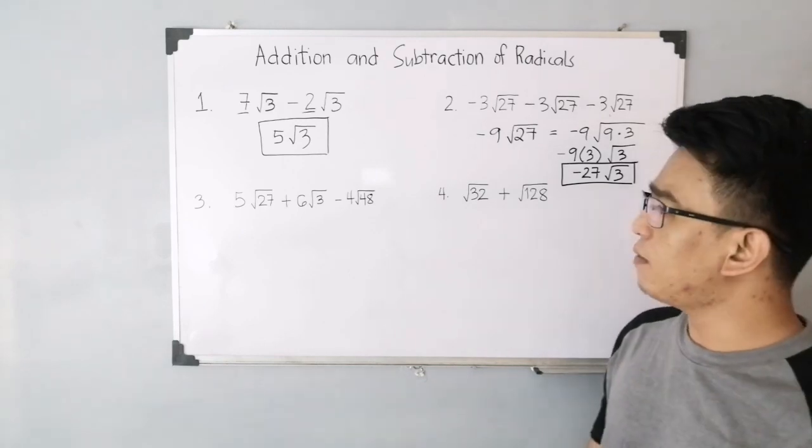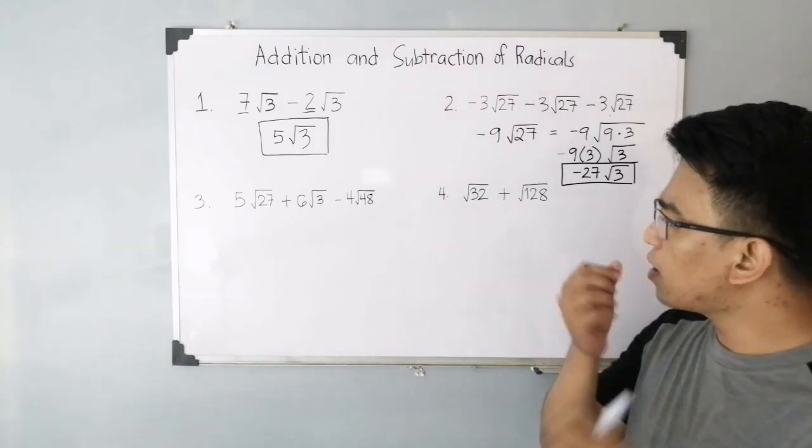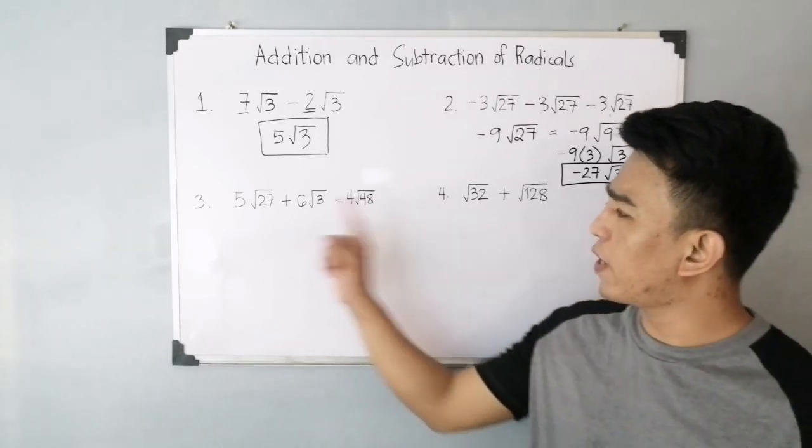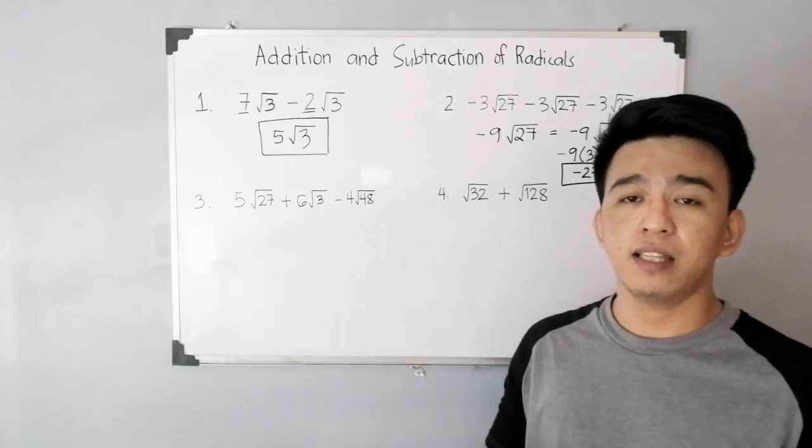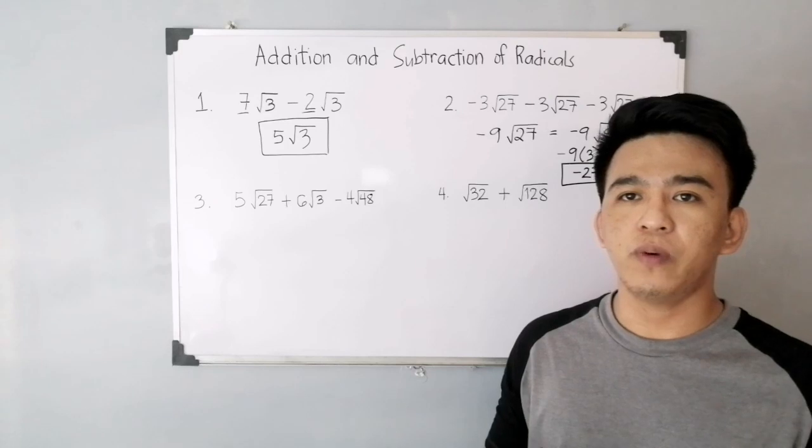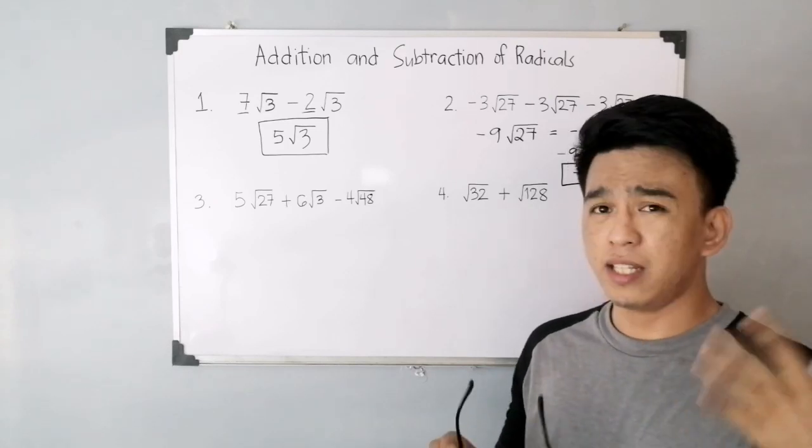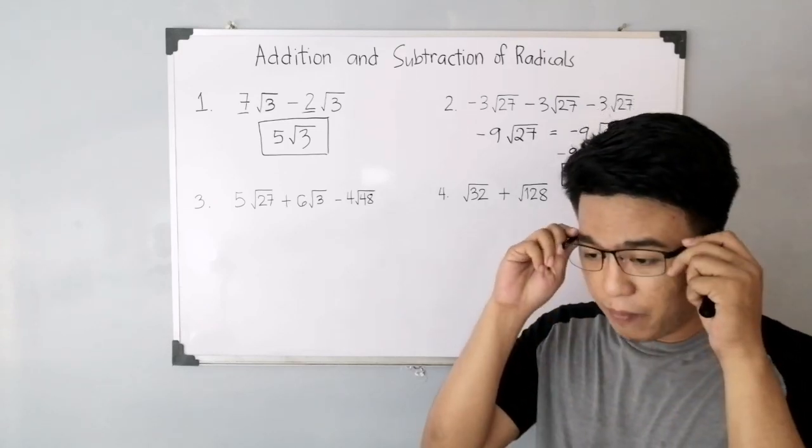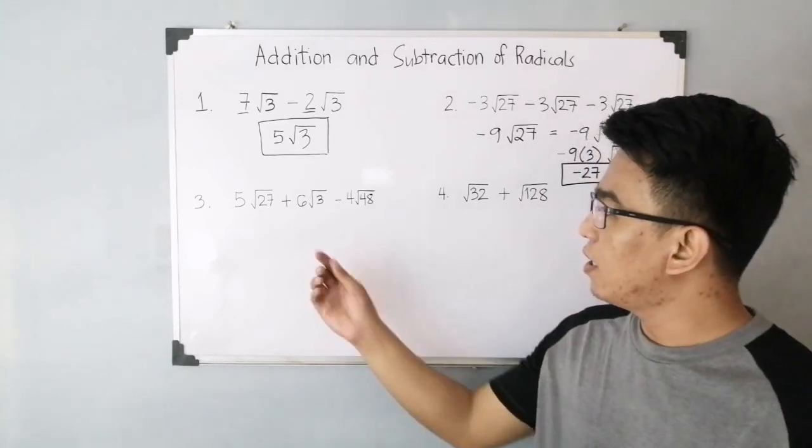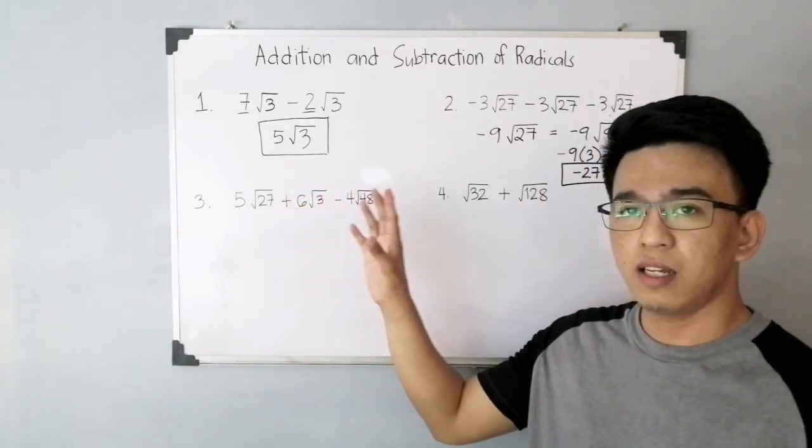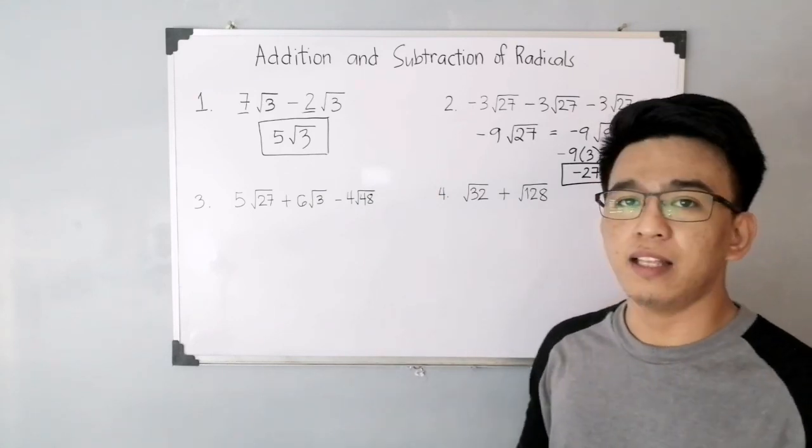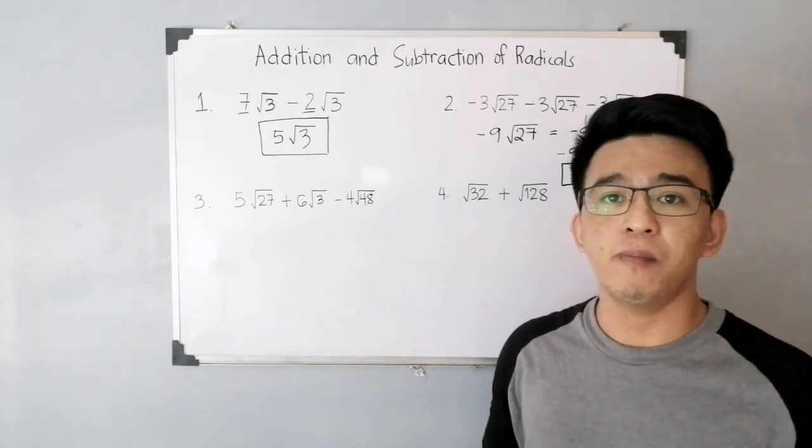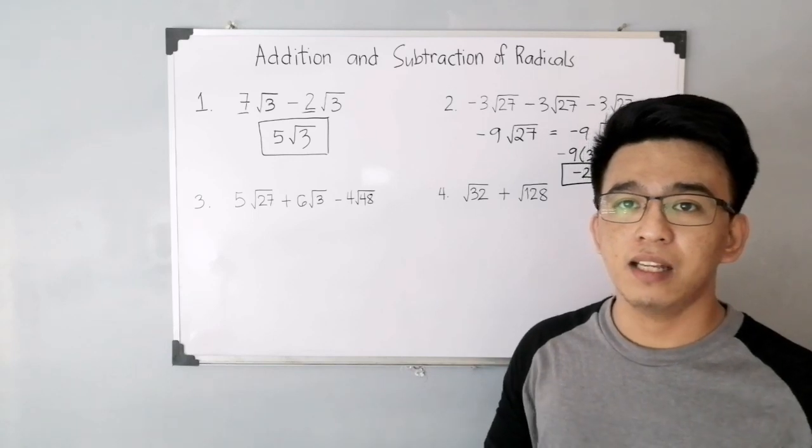Now, let's have item number 3. Notice the radicals are square root of 27, square root of 3, and square root of 48. They're different, so we can't add them or subtract them directly. Since the radicals are not common, we need to make them common by extracting the square roots.